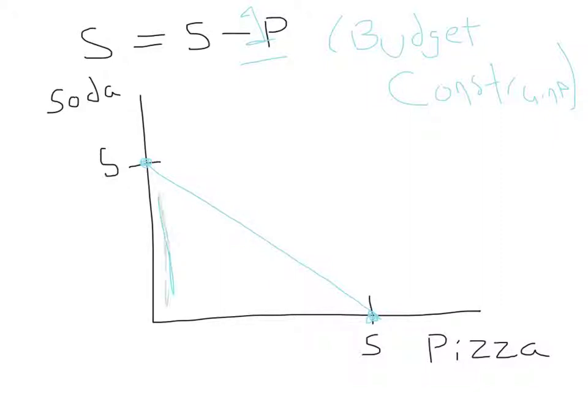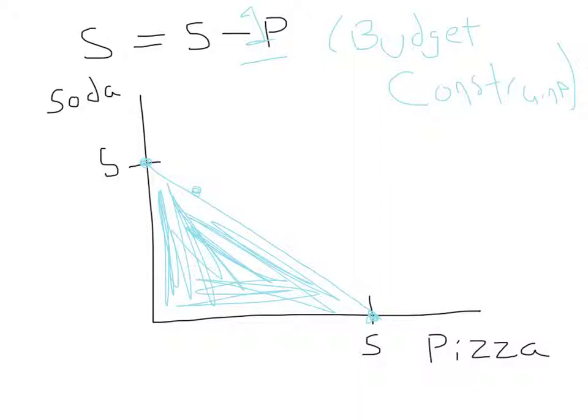These points that I'm coloring in blue are feasible, although, as you can imagine, we wouldn't want to pick a point close to the origin when we could pick a point out here or here that's on the budget constraint, spending all of our money. And then these points that are left in the white space up and to the right are infeasible. We just can't afford to buy those consumption bundles.